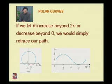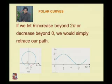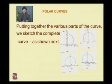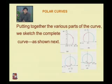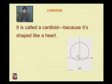As theta increases from 3pi/2 to 2pi, r increases from 0 to 1. If theta increases beyond 2pi or decreases below 0, we simply retrace our path, so there is no need to find values beyond 2pi. Putting together all parts of the curve, we get the complete curve shown in the figure.